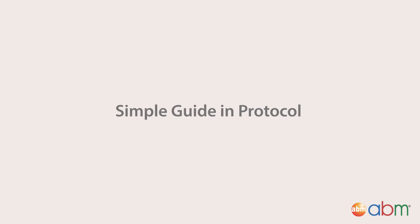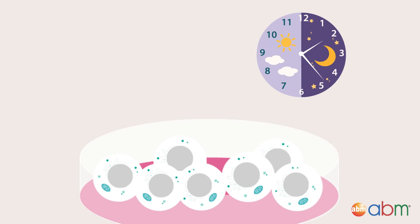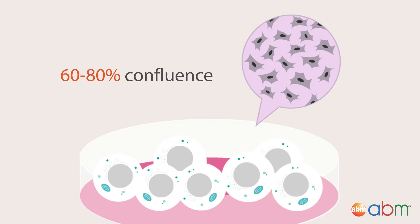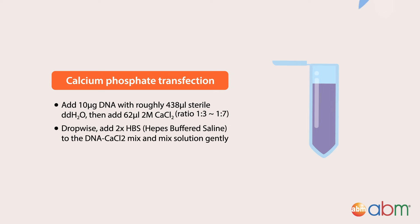Simple guide and protocol for adherent cells: plate cells in growth media in absence of antibiotics overnight to reach 60 to 80 percent confluence. For transfection day, in a sterile Eppendorf tube add 10 micrograms of DNA with roughly 438 microliters of sterile ddH2O, then add 62 microliters of 2 molar calcium chloride dropwise. Add 2X HBS to the DNA-calcium chloride mix.